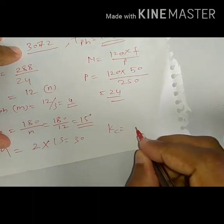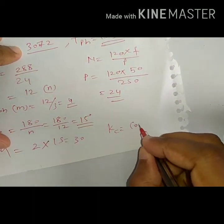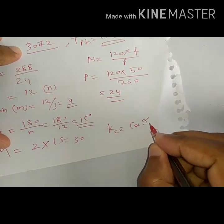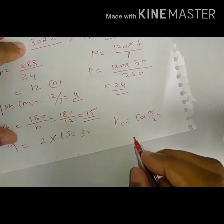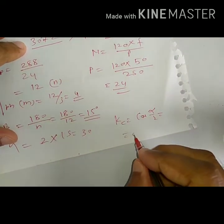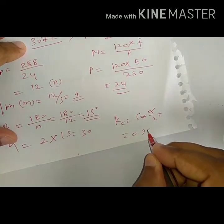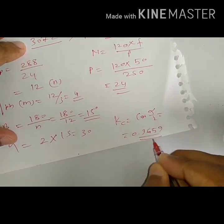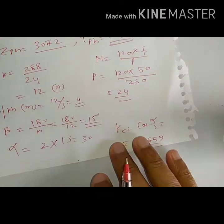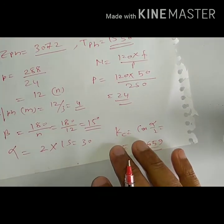Therefore Kc = cos(alpha/2) = cos(15 degrees) = 0.9659.